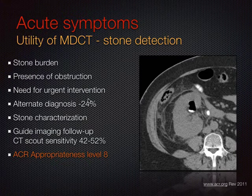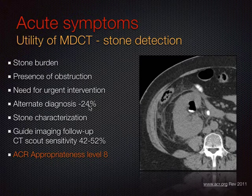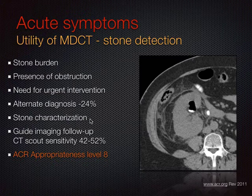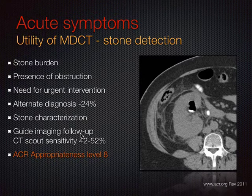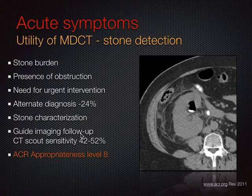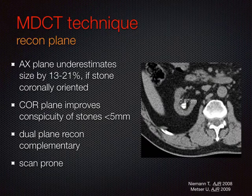In the absence of stones, alternate diagnoses are relatively frequent—appendicitis, diverticulitis, gynecologic complications. With new standard technology, we can perform chemical composition analysis on stone and tell you whether it's calcium-containing or uric acid. CT can act as a guide for imaging follow-up. It's kind of a one-stop shop for assessment of stone disease in the acute setting, and that's the reason why it's a standard of care.